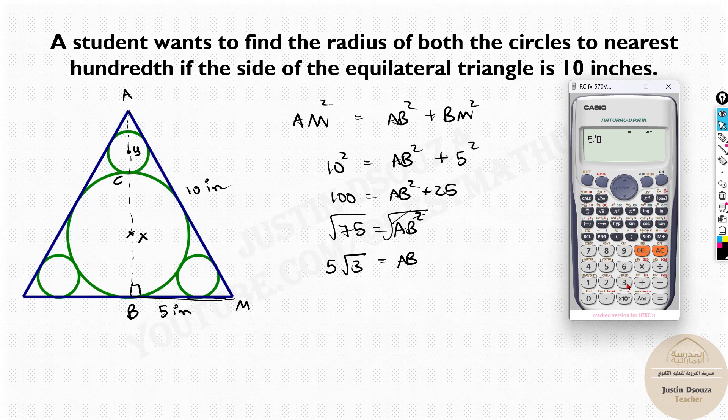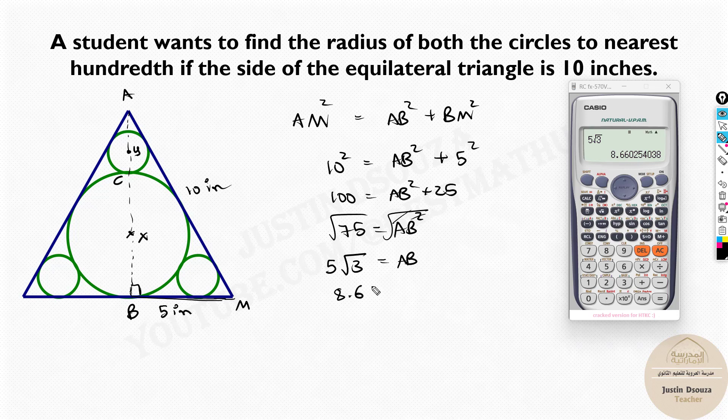You can put this in the calculator. Here 5√3, or you can directly put √75, same thing, and press equals. You'll get 8.66 inches. Now here, very important, since they said nearest hundredth, try to maintain all answers in nearest hundredth.